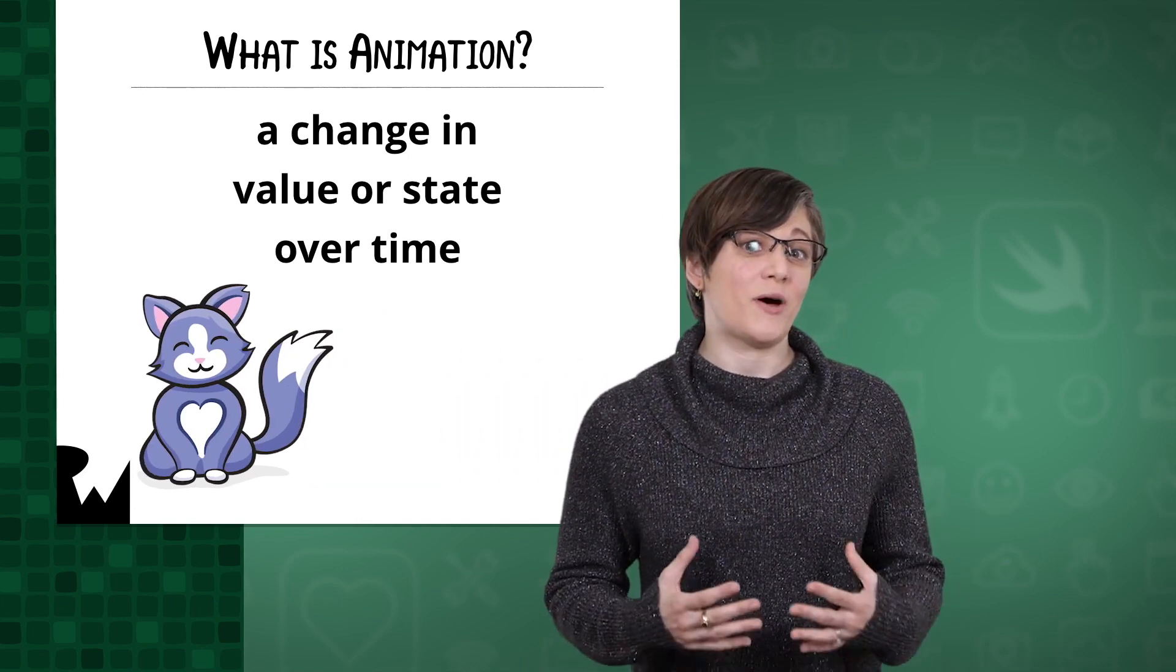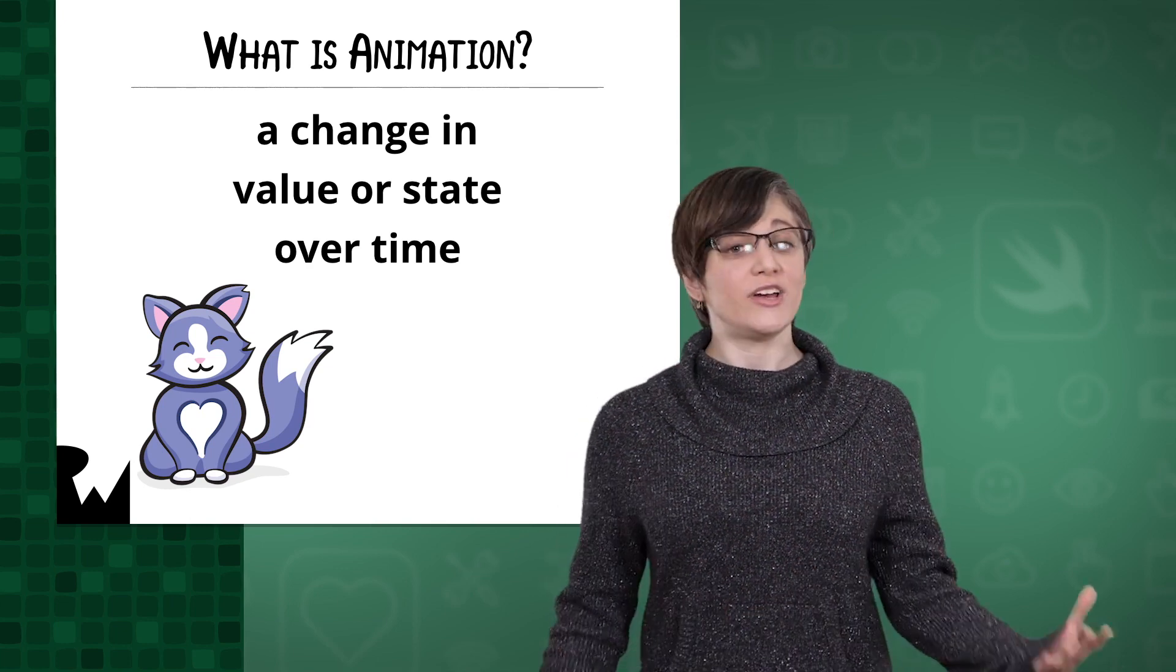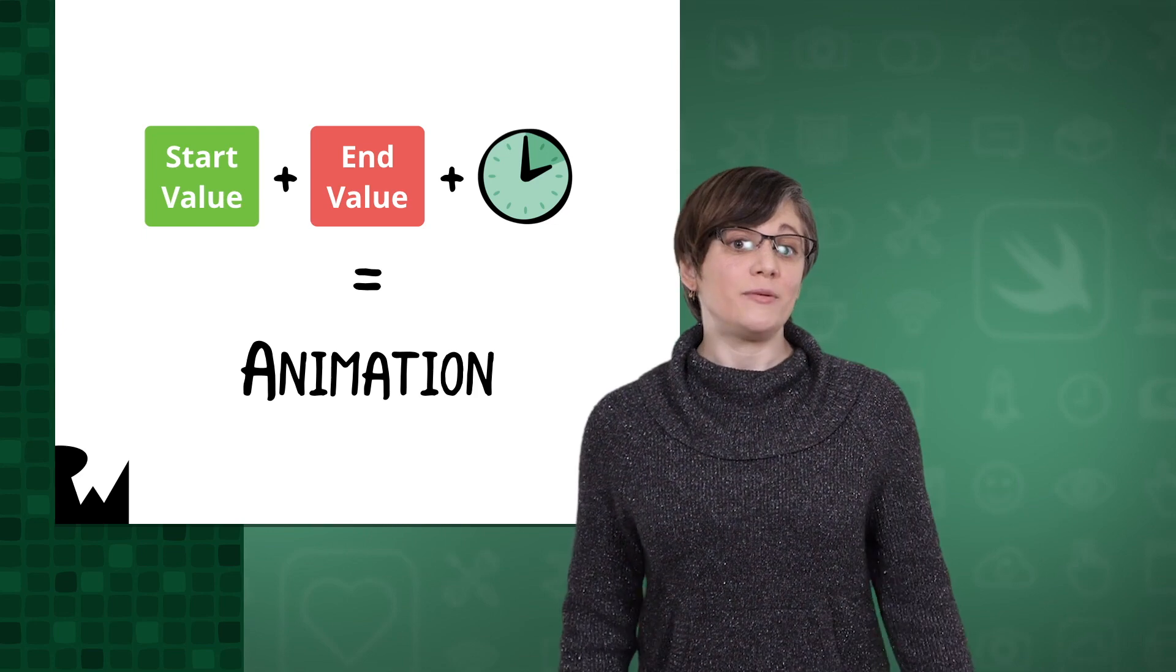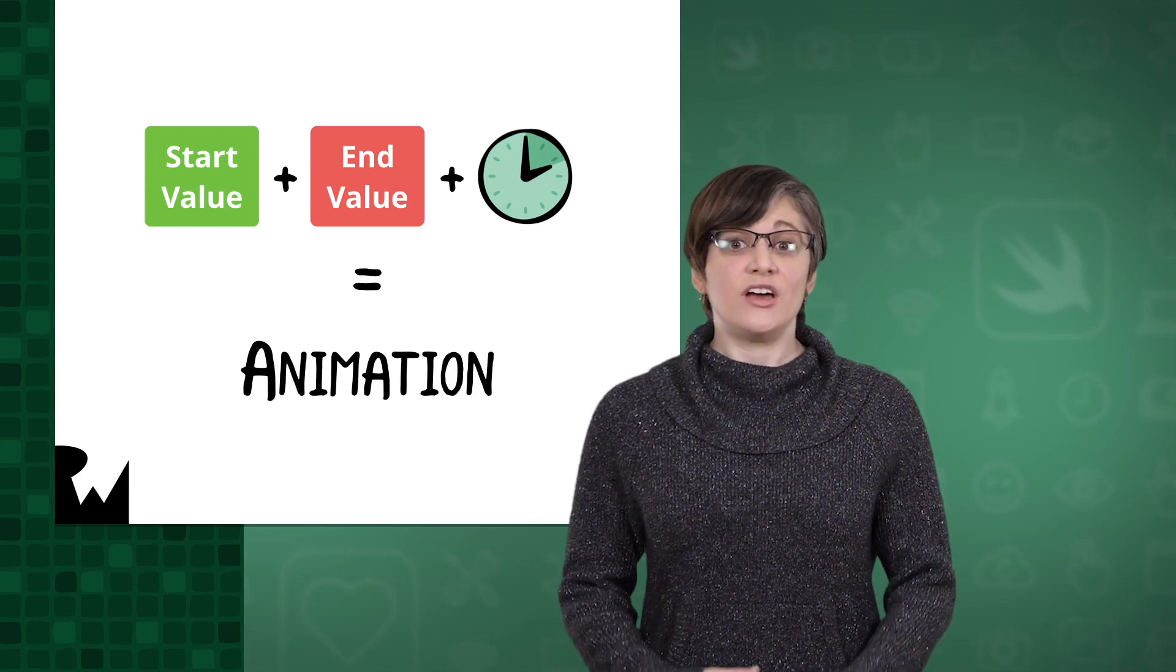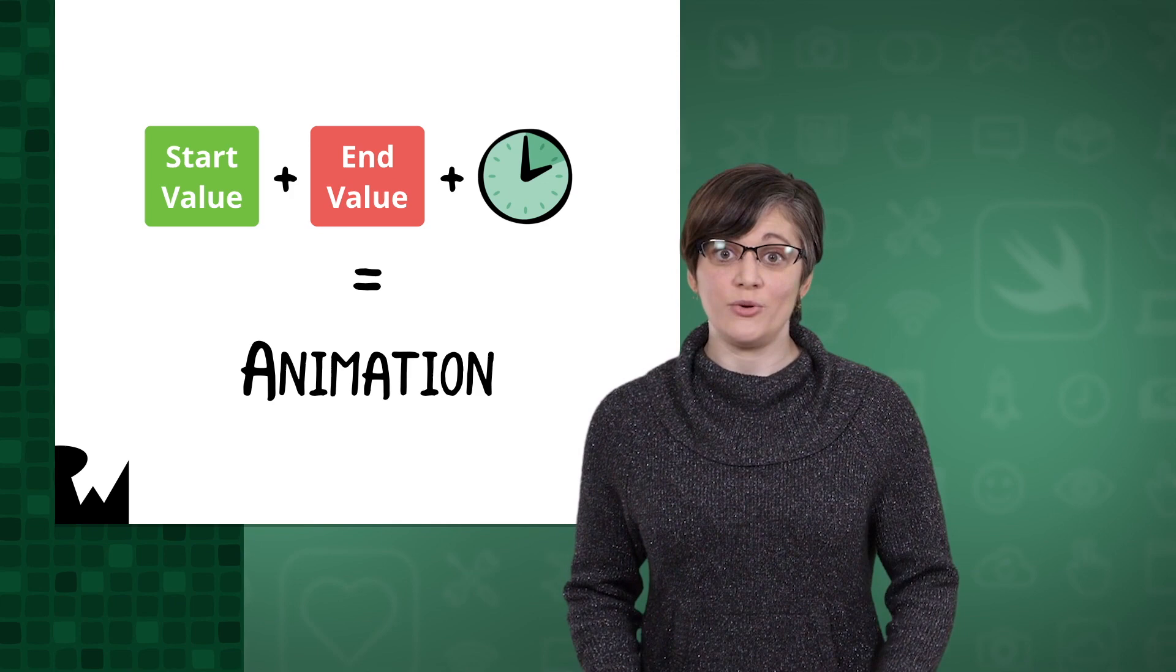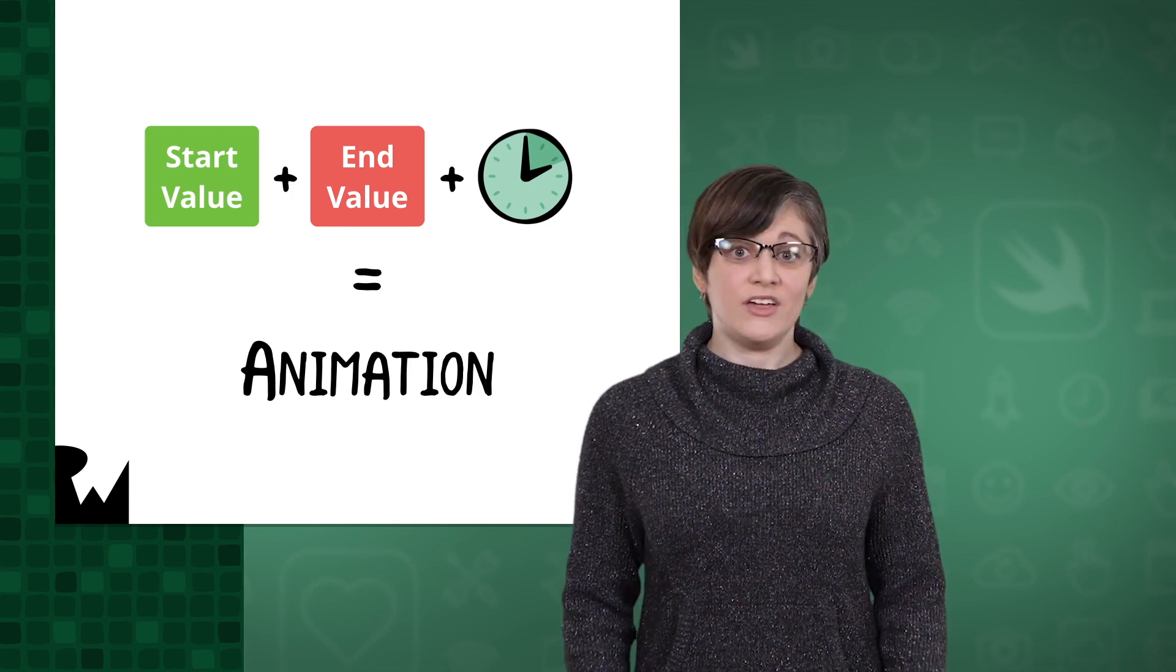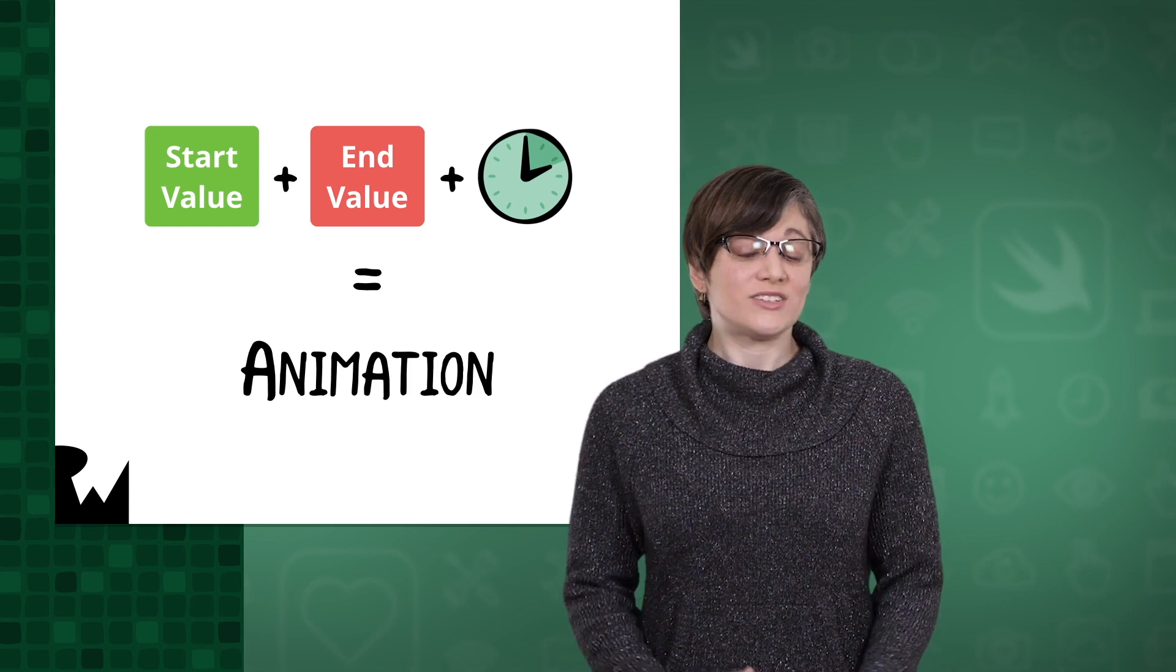Position is an easy property to think about animating, and when you're animating constraints, much of it will be position-based. For every animation you create in this section, consider what the starting value is, what the ending value is, and how long it should take to change between those two values. There will be bells and whistles to add, but start with the basics.